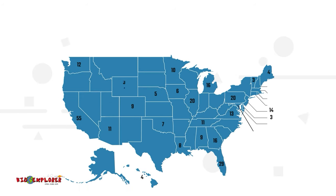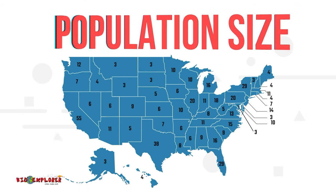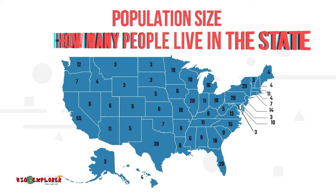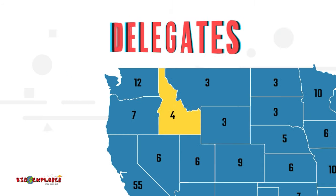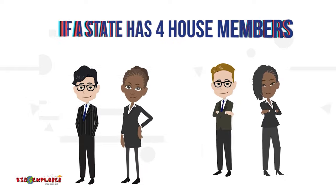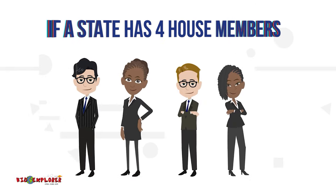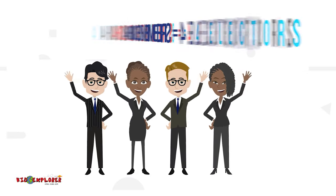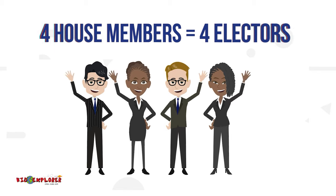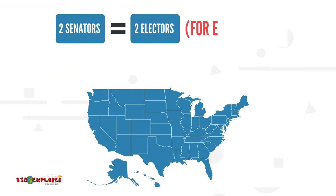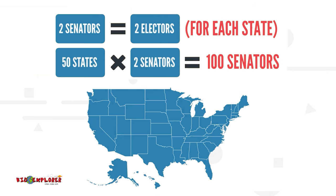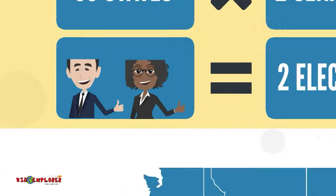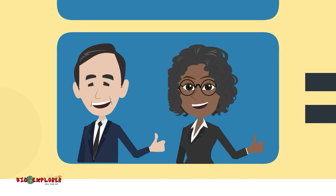Each state is given a certain number of electors based on the state's population size. The number of residents who live in the state determines how many delegates a state gets in the House of Representatives. Whatever that number of House members is equals the number of electors that state is given. Then, every state gets two more electors for their two senators. There are 100 senators for 50 states — every state has two senators, and those two senators equal two electors per state.